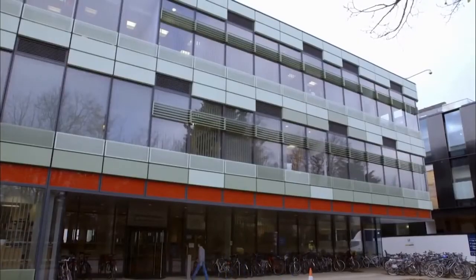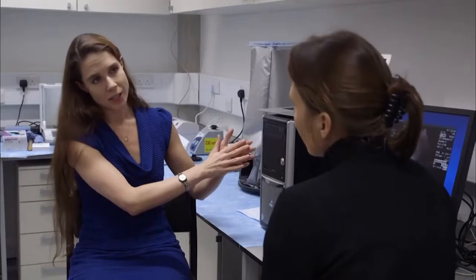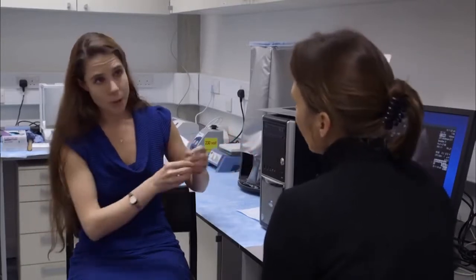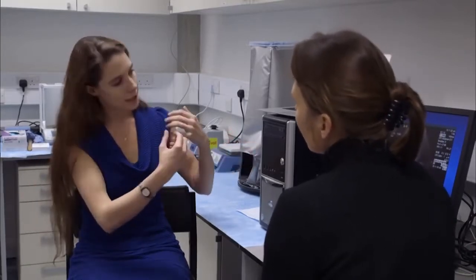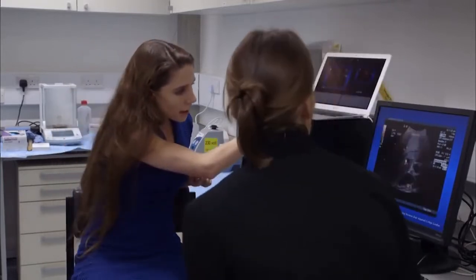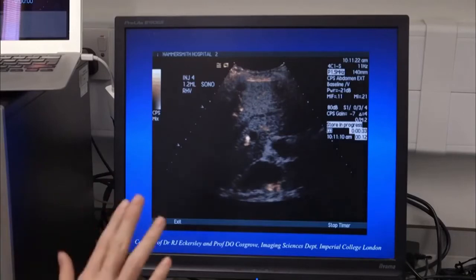At Oxford University, my friend and fellow bubble scientist, Dr. Eleanor Stride, explains. So we put these very, very tiny bubbles into the bloodstream and suddenly you're able to see where the blood is flowing. If I show you an image of that in action. This is a scan of the liver. This is before the contrast agent has got to the liver.